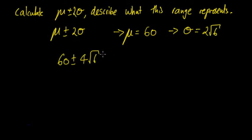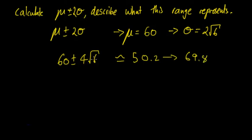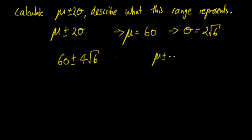To give actual decimal values, 4√6 is about 9.79, so the range is approximately 50.2 to 69.8. However, we can leave it in exact form as 60 ± 4√6 if it's a calculator-free question. The real part of this question is what this value represents: the mean plus or minus 2 standard deviations corresponds to approximately 95% probability that a value lies within this range.